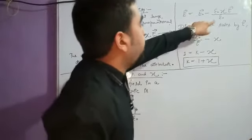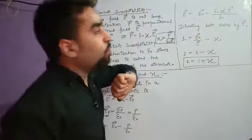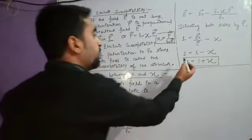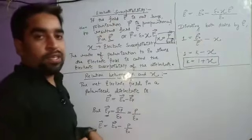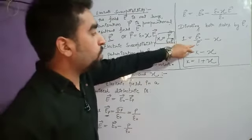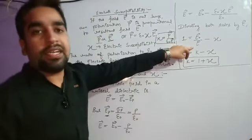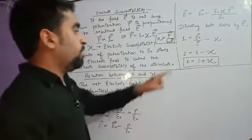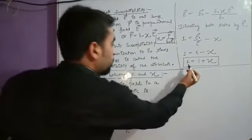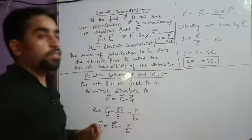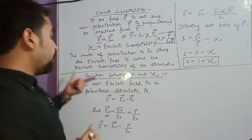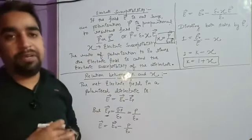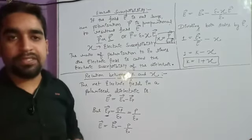The ratio of the original field E₀ to the net electric field E is known as the dielectric constant K. So replacing E₀/E with K, we get 1 = K minus χ, which gives K = 1 + χ. This is the relation between dielectric constant K and electric susceptibility χ. Thank you, God bless you.